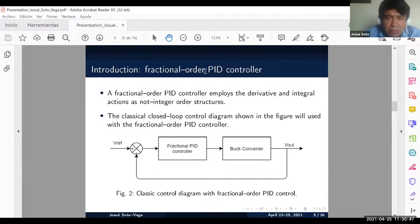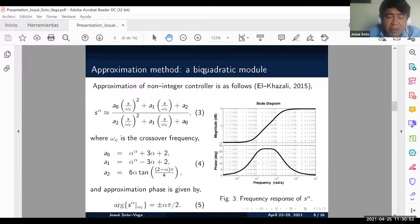To approximate the non-integral order we use the method proposed by Oustaloup, a biquadratic module given by equation three where omega c is the crossover frequency and the coefficients are given by the set of equations in four. This depends on the alpha value and the approximation of the phase. The value of alpha is related by equation five and the frequency response of non-integral order is shown in figure three.